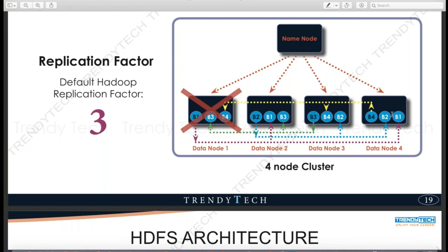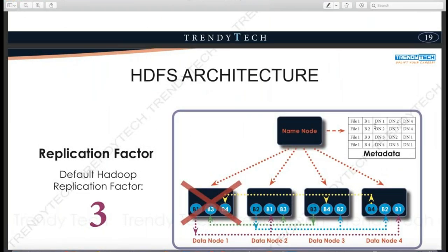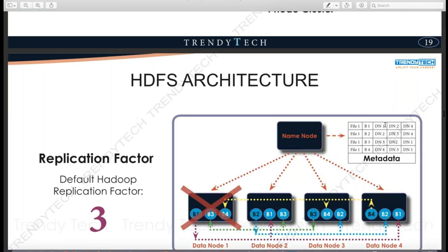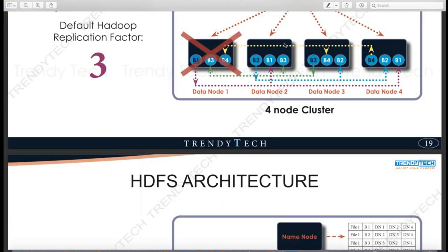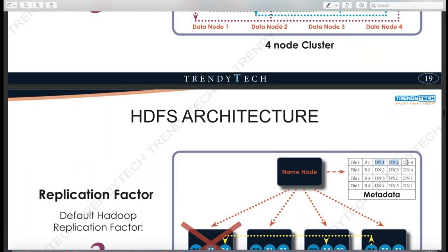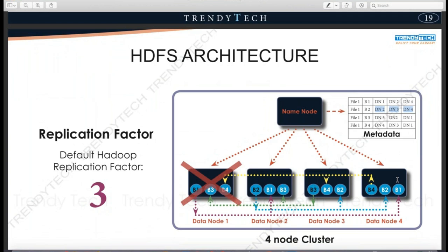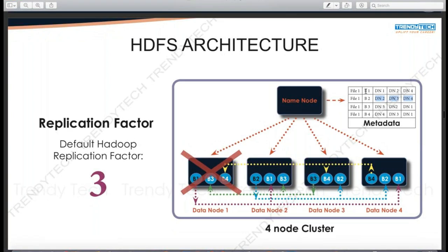The NameNode's metadata table must also hold information about replicas. For example, file one block one is stored on DataNode 1, DataNode 2, and DataNode 4. File one block two is on DataNode 2, DataNode 3, and so on. The metadata table must be up to date and include entries for all replicas, so if one machine fails, the NameNode knows where the other copies are kept.